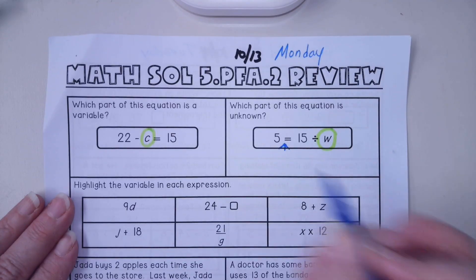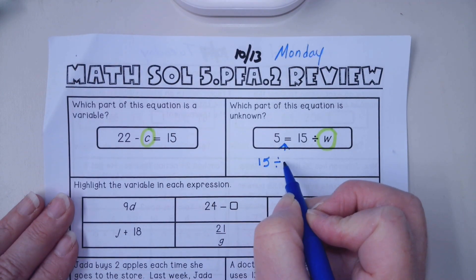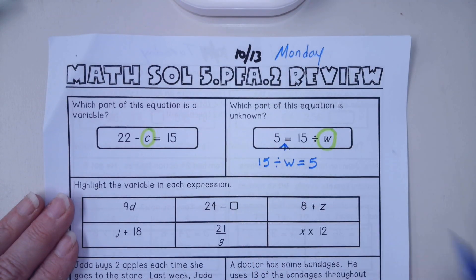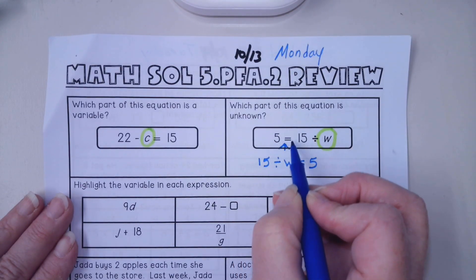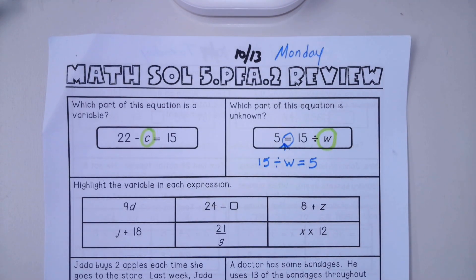You could rewrite this equation as 15 divided by W equals 5. Same equation. Just watch where that equal sign is because it comes up frequently where they'll switch it around and try to trick you.